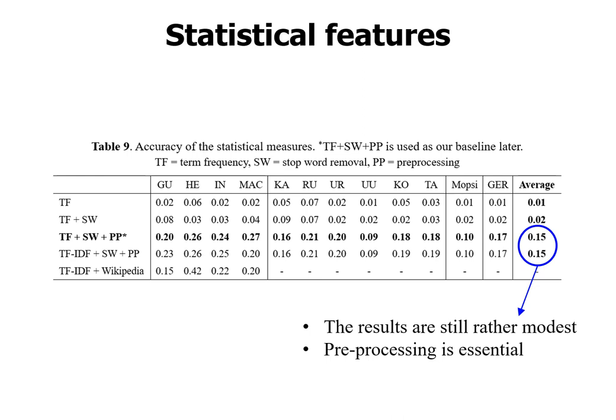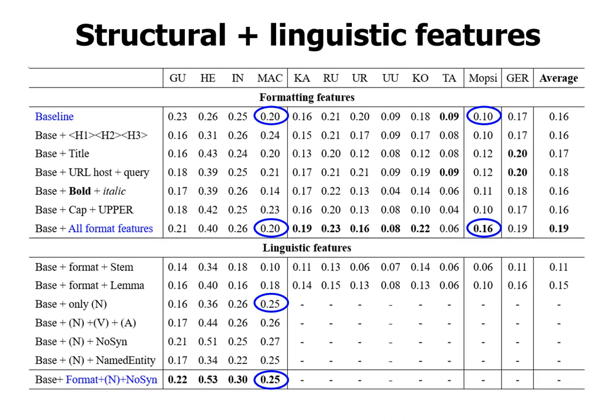From this we establish a new baseline using the best statistical features: TF plus stop word removal and preprocessing. Adding structural features — title tags, header tags H1–H3, URL, bold, italic, emphasis, and others — we can see the effect on different datasets. For Macworld there is no improvement. Header tags give the most improvement: from 20 to 24. For the Finnish newspapers there is systematic improvement in almost all, and Mopsi improves from 10 to 16. Overall the average improves from 16 to 19.